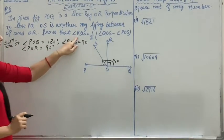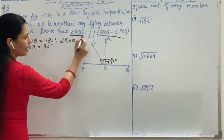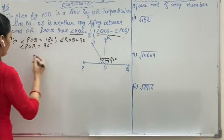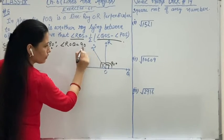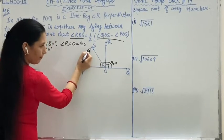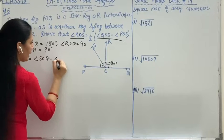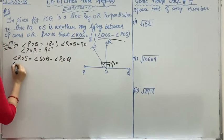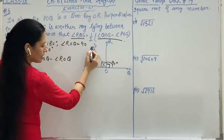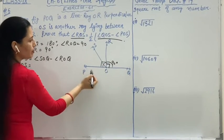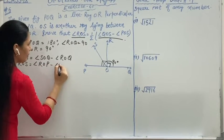Now we have to prove that angle ROS is equal to half of this angle. So first we write angle ROS in terms of QOS and POS. Angle ROS equals angle SOQ minus angle ROQ. When we write angle ROS in terms of POS, angle ROS equals angle ROP minus angle POS.